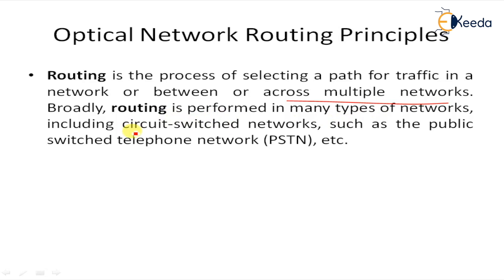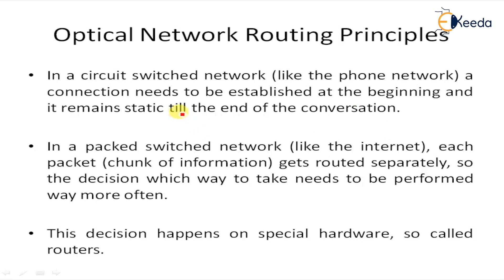Broadly, routing is performed in many types of networks, including circuit-switched networks like the public switched telephone network and PON networks. In a circuit-switched network, the connection needs to be established at the beginning and remains static till the end of the conversation — one static, dedicated, or predefined path.